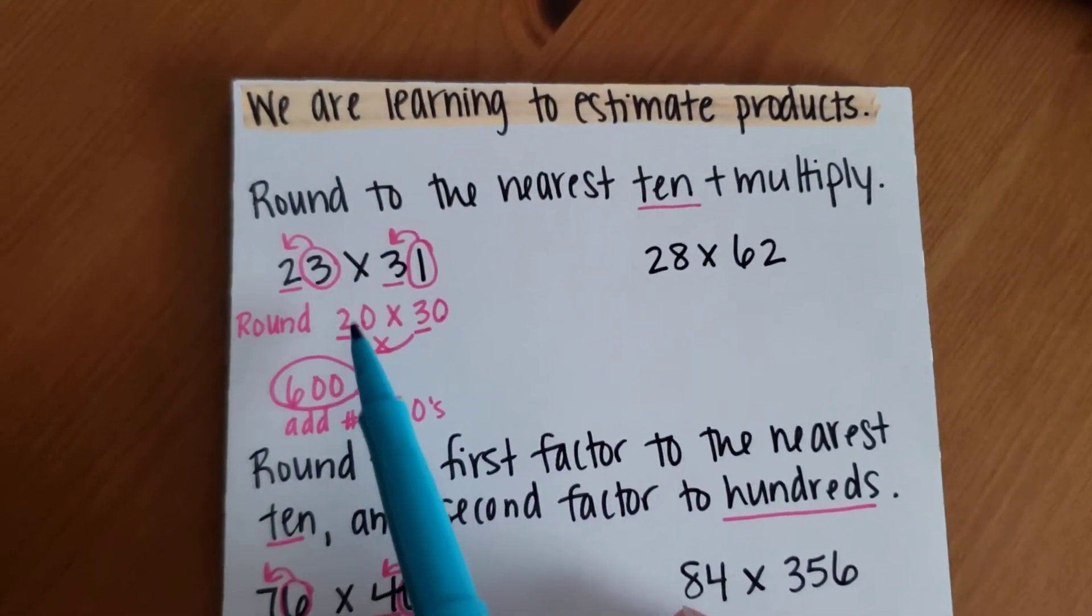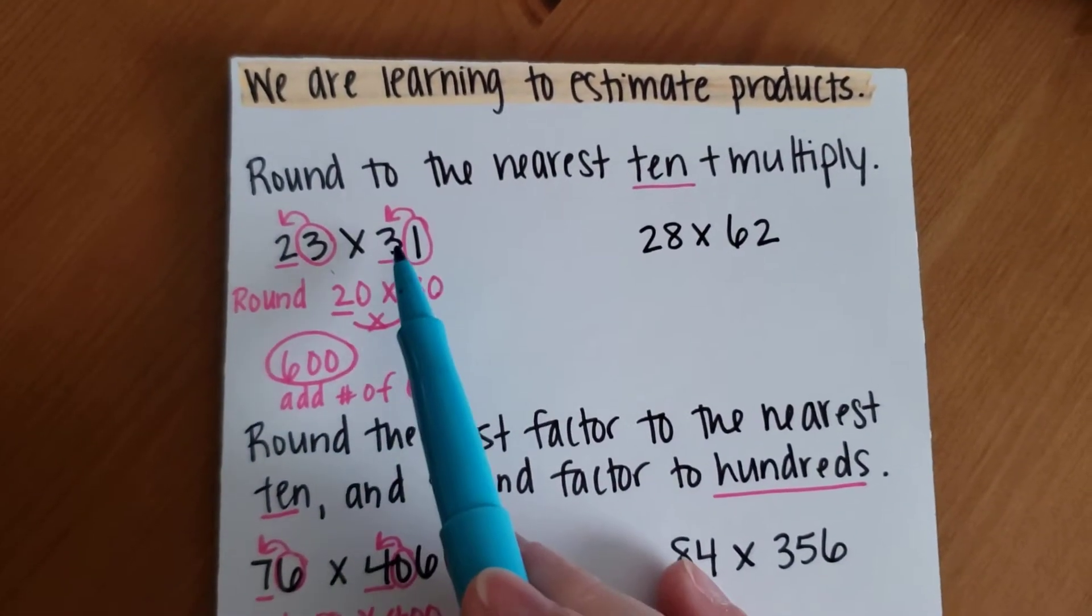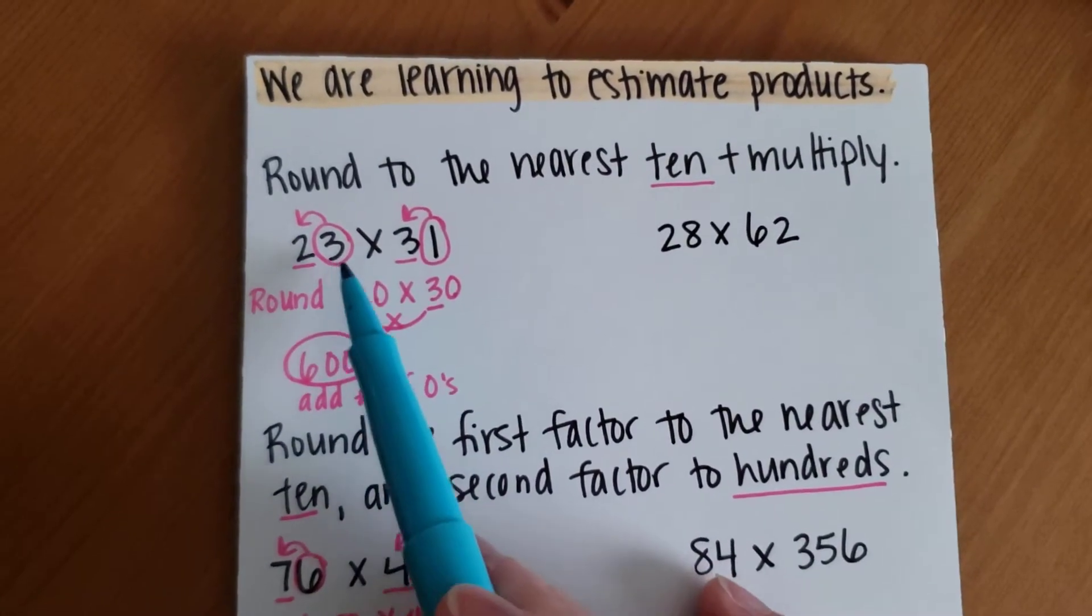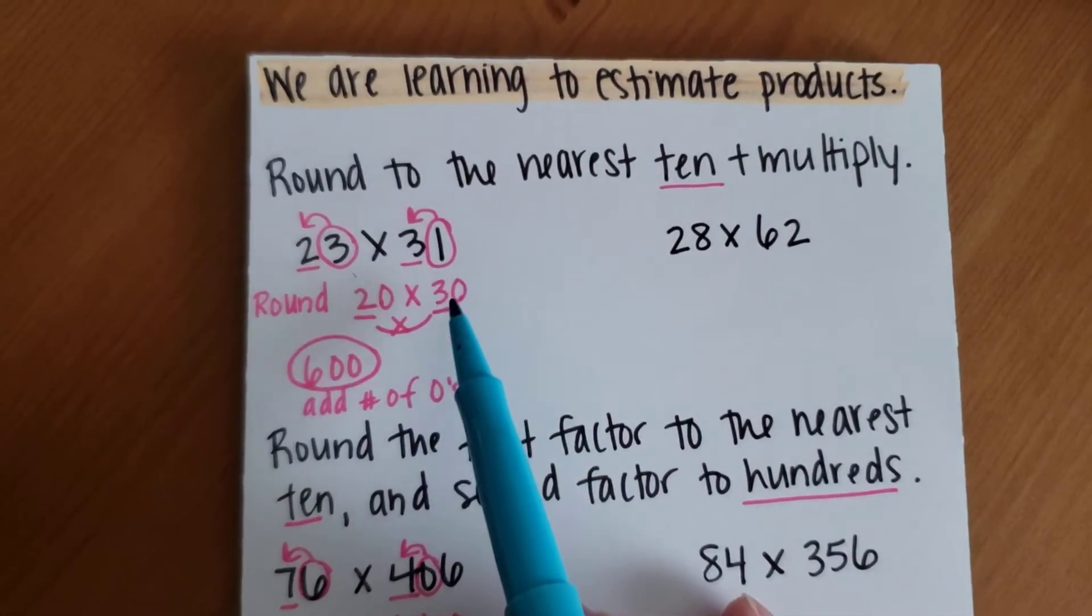I did a little example over here where first I found where my 10 place values were. I rounded those numbers. That's the first step. So 23 rounds to 20, 31 rounds to 30.